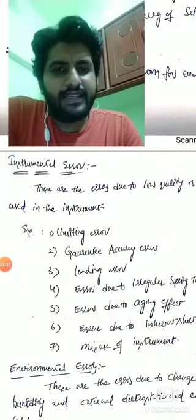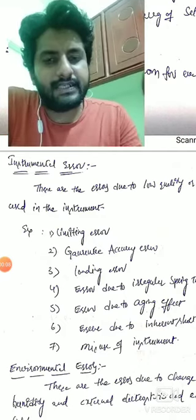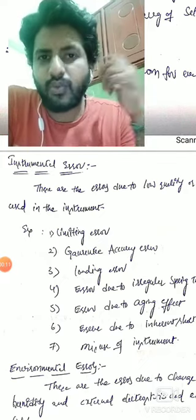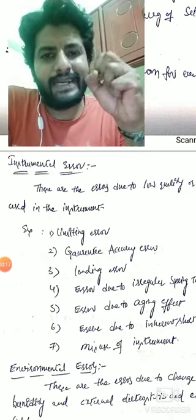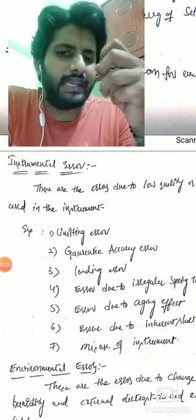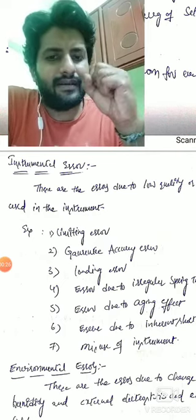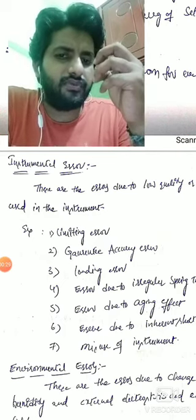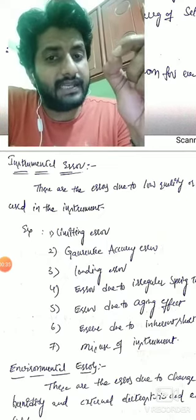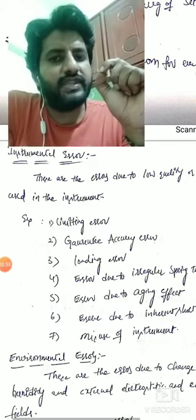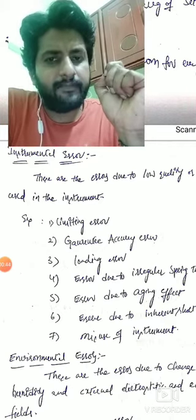Good morning, I'm Anjani Kumar, covering instrumentation for electrical students. In the last session we started with instrumental errors. Instrumental errors are errors due to low quality, substandard materials used in an instrument. The types of instrumental errors include limiting error and guaranteed accuracy error, which we discussed. The limiting error is the percentage error that can be explained by the manufacturer itself.